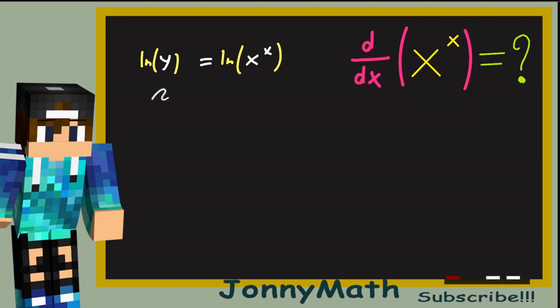And now, by using properties of logarithms, we get the natural log of y equals x times the natural log of x. Now, to differentiate x to the x, we can use implicit differentiation.